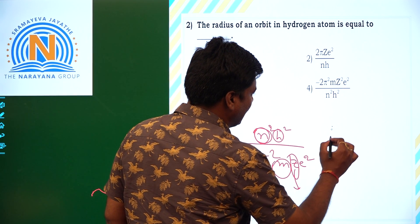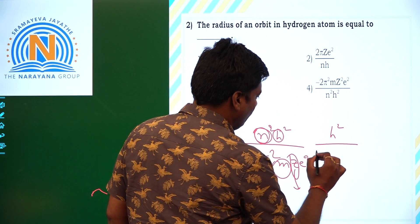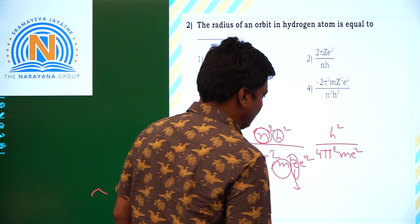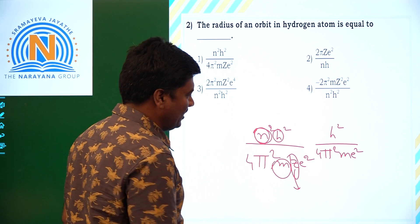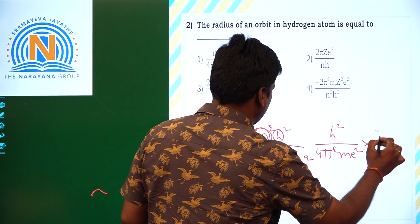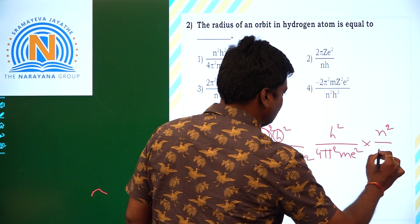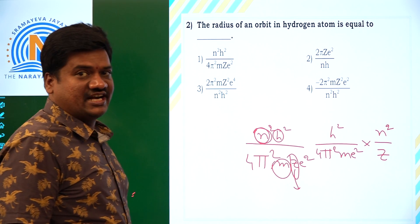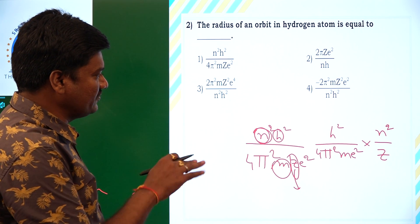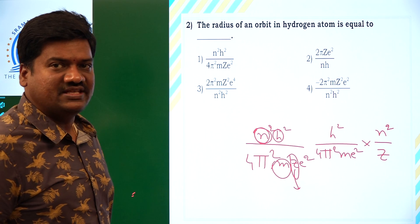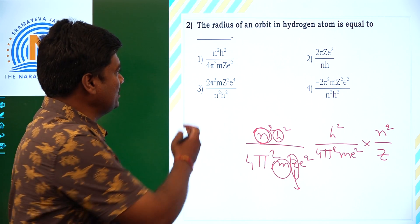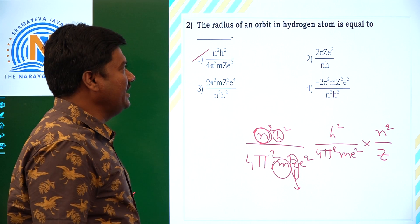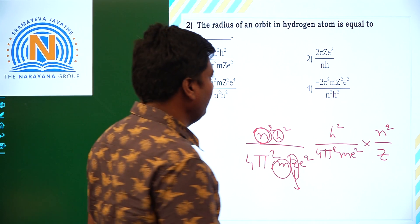Then this formula I can write as h square by 4 pi square m e square, multiplied by n square by z. So the radius is proportional to n square by z, where n is the principal quantum number and z is the atomic number. By using this, we can calculate the radius of a specific element.